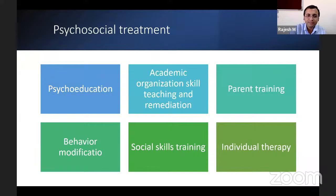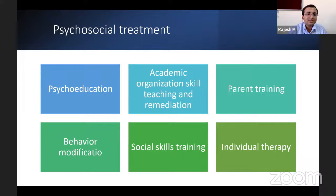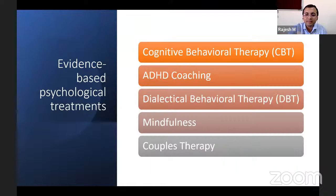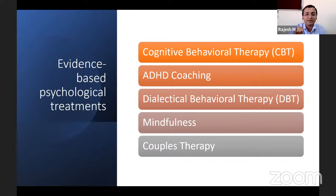Psychosocial treatment is particularly important because managing these children in society is a major challenge for parents and teachers. Psychosocial interventions involve psychoeducation, academic organization, skill teaching and remediation, parent training, behavior modification, social skills training, and individual therapy. Evidence-based psychological treatments include CBT, ADHD coaching, dialectical behavior therapy, mindfulness, and couples therapy for parents of ADHD children — all offered by psychologists.